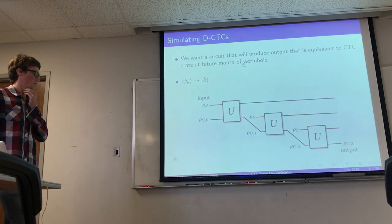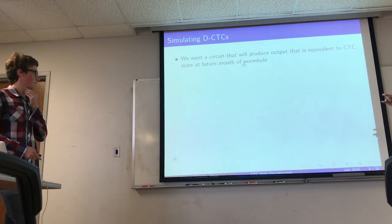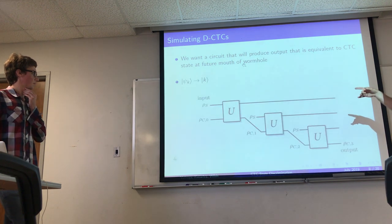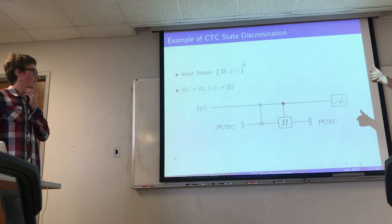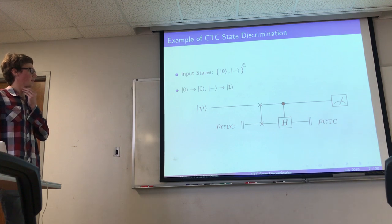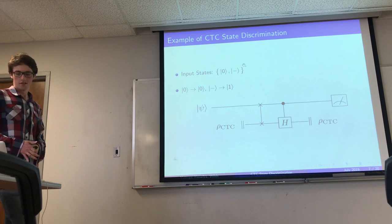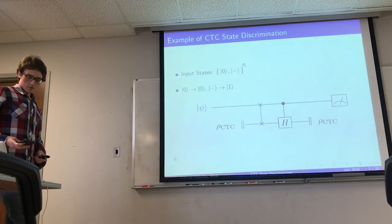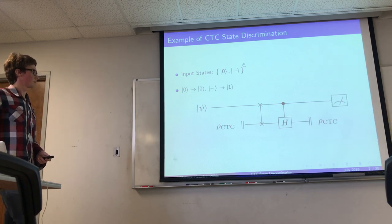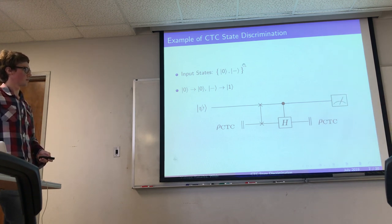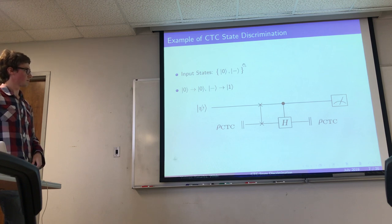Going back to the previous slide, the classical Markov chain structure comes from the specific unitary chosen: a swap followed by a controlled unitary, where the control is with respect to a particular basis. When you do a partial trace with respect to the controlled unitary, that acts like a measurement of the qubit with respect to the control basis — and that's why the Markov structure emerges.